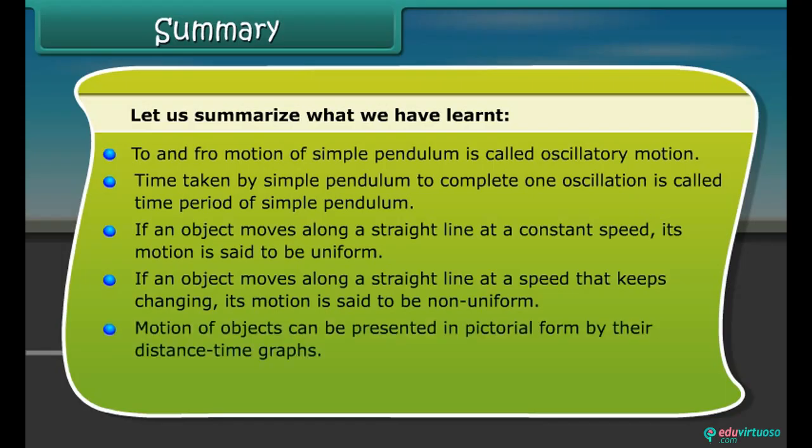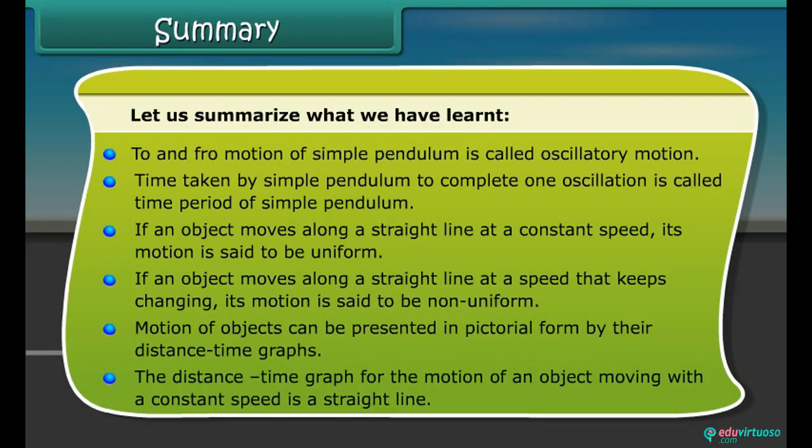Motion of objects can be presented in pictorial form by their distance-time graph. The distance-time graph for the motion of an object moving with constant speed is a straight line.